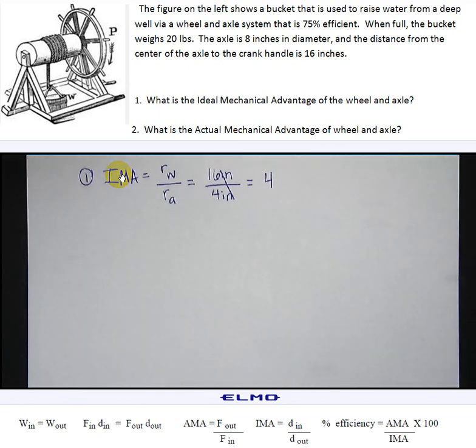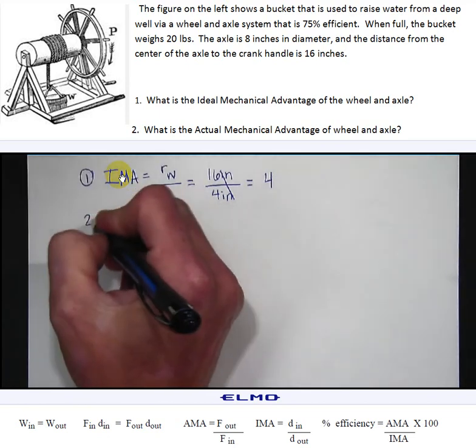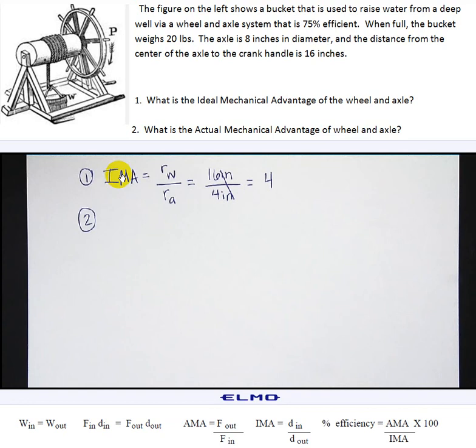Question number two, what is the actual mechanical advantage of the wheel and axle? For actual mechanical advantage, if you look at the formulas at the bottom of the screen, we need to do force out divided by force in but I wasn't given the amount of force in. I know that the bucket weighs 20 pounds so my output force is going to be 20, but now I have two variables.